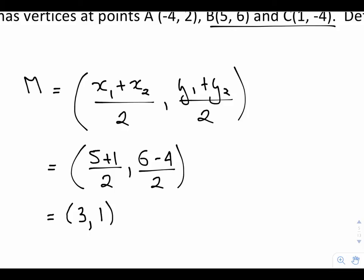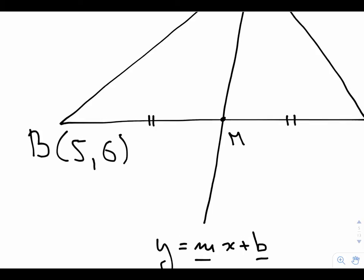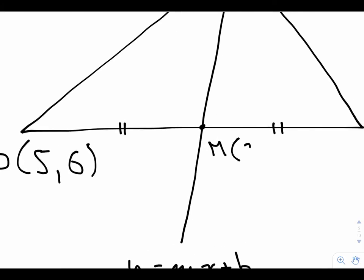I get 3, 1. So there's my midpoint, 3, 1. Let's write it in. Coordinates for M. And now I can figure out my slope.